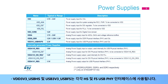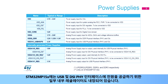VDD-3V3 USB-HS and USB-3V3 USB-FS are used to supply the embedded USB physical interface for high-speed and full-speed ports respectively. The STM32 MP15X also supplies some internal regulators to power the USB and DSI physical interfaces.